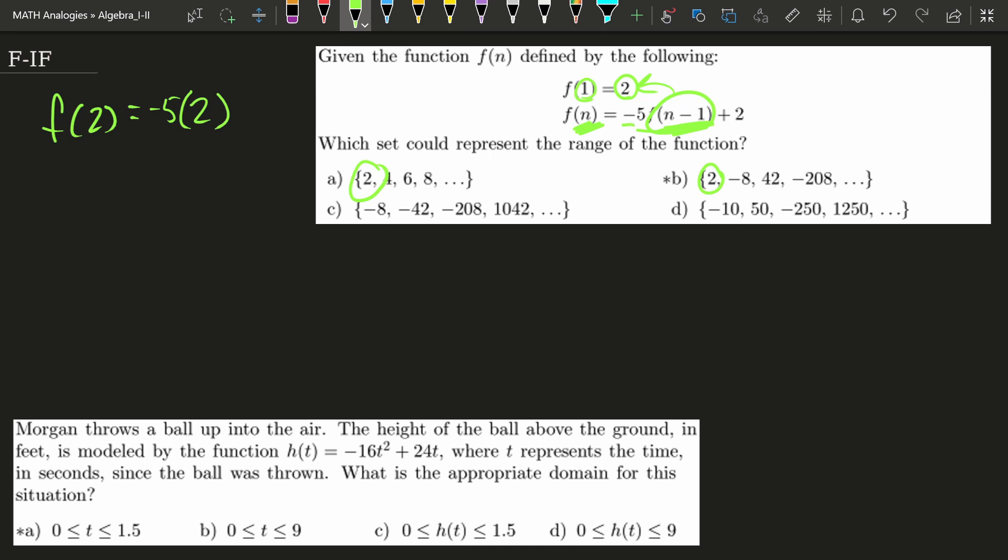So we have negative 5 times f of 1 being 2, and then we add 2. So we'd have negative 10 plus 2 or negative 8. So f of 2 is negative 8.